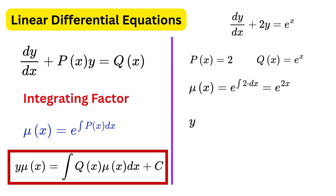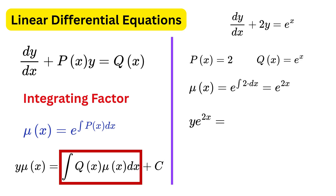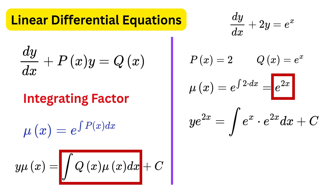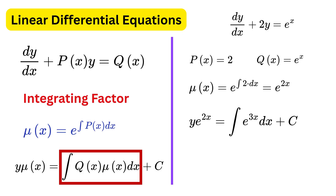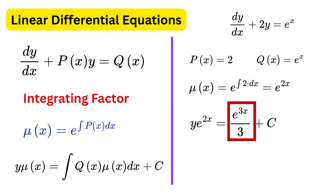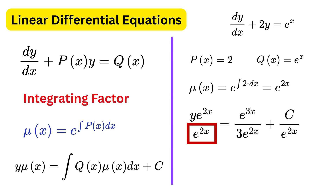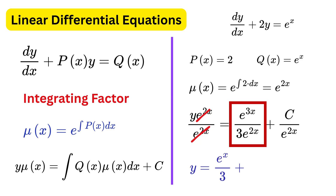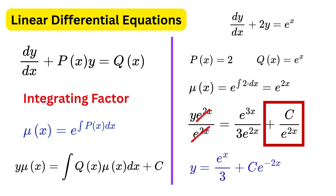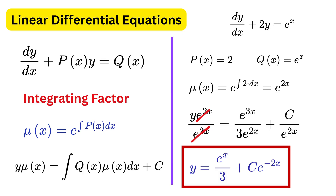Next, use the formula to get y times e raised to 2x equals the integral of e raised to x times e raised to 2x, which is e raised to 3x. This integral equals e raised to 3x over 3, plus c. To solve for y, divide both sides by e raised to 2x. This gives y equals e raised to x over 3 plus c times e raised to minus 2x. This is our final answer.